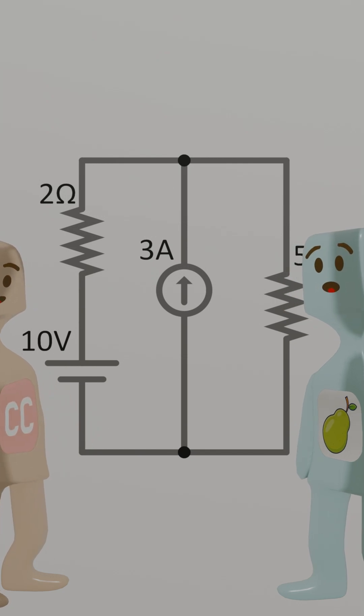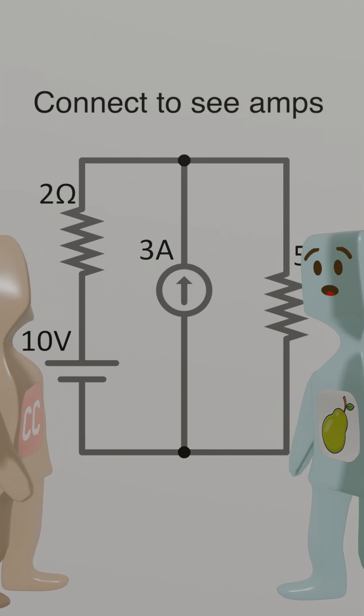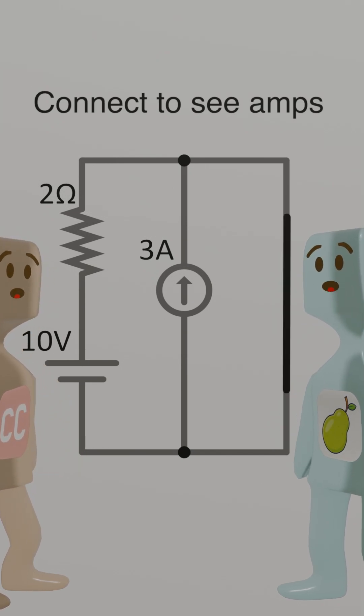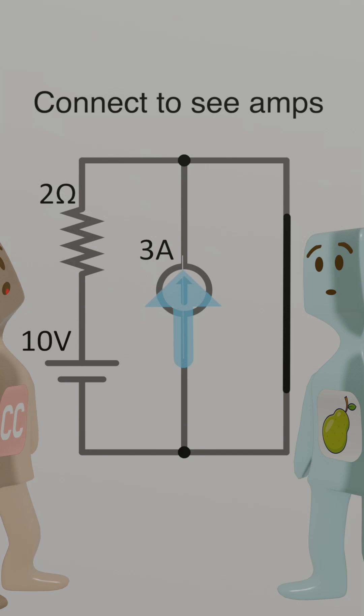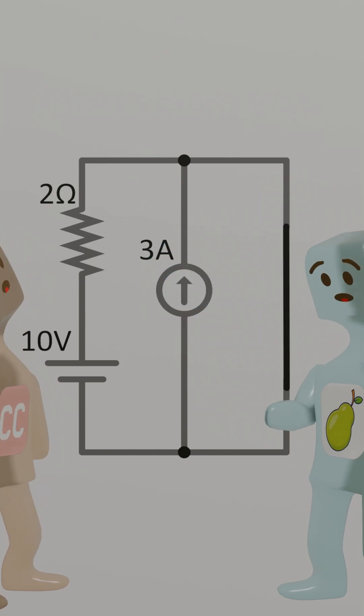Now, let's crush the headache of a circuit. With Norton, watch the speed. Step 1. Connect to see amps. Short the low terminals. Current from the left, 10 volts over 2 ohms is 5 amps. Plus 3 amps from the middle. Total is 8 amps. Whoa! Just like that?